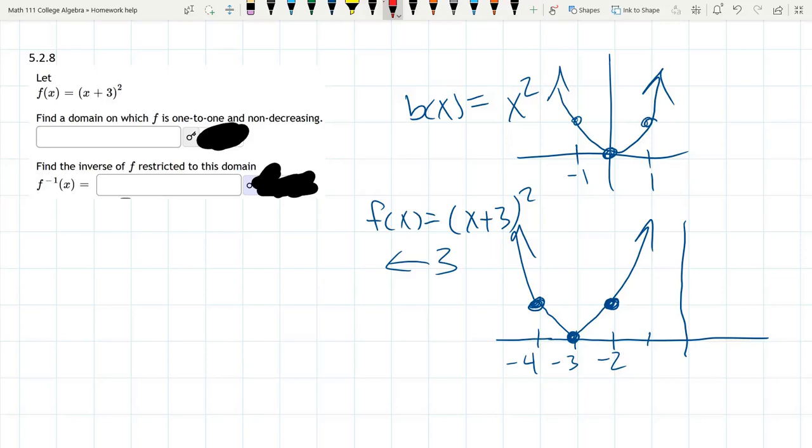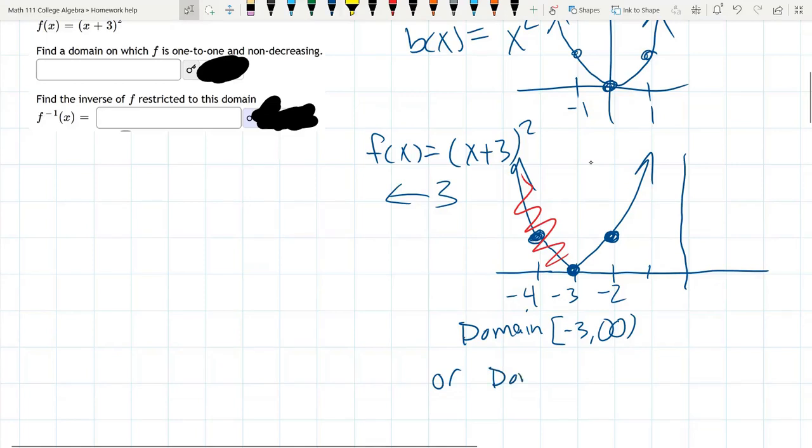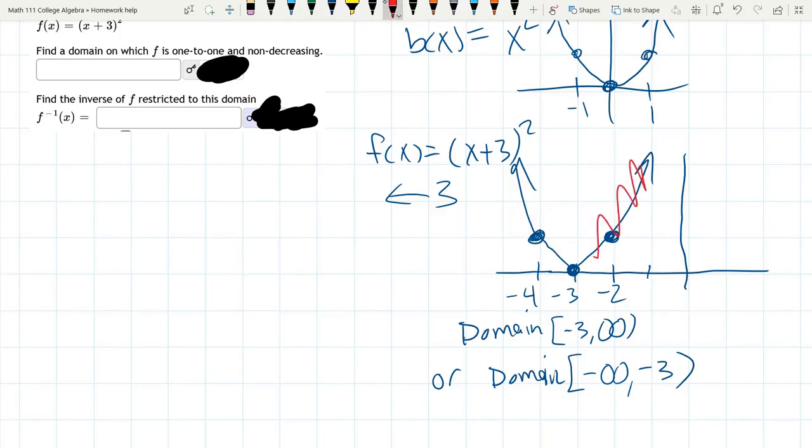I'm going to take the red and throw out half of the domain. You can see -3 is where the vertex is. I could have used the vertex formula. I'm going to pick the left or the right half. If I cross out the left half, I've restricted this domain. This restricted domain is [-3, ∞). That would be one choice. Or the domain is (-∞, -3]. That would correspond to crossing out the right half of this.